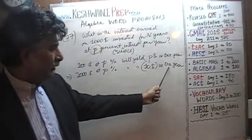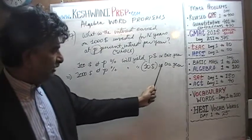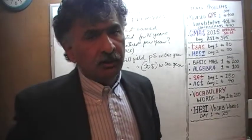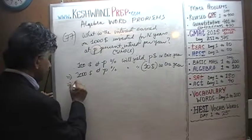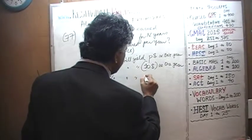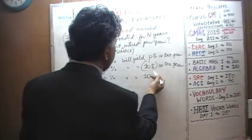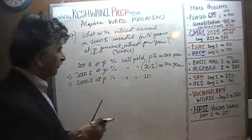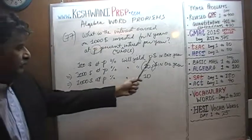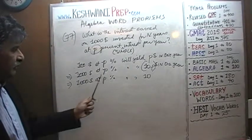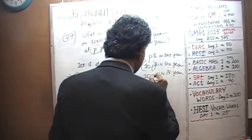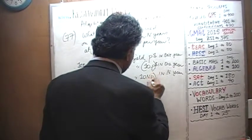If 10P dollars is the amount of interest earned in one year, then investing for two years should earn twice as much, three years three times as much, and seven years seven times as much. We are investing for N years, so $1,000 invested at P% for N years should earn 10 times P times N dollars.